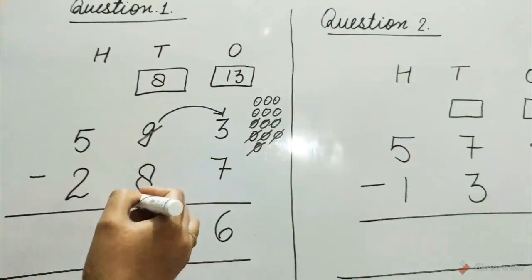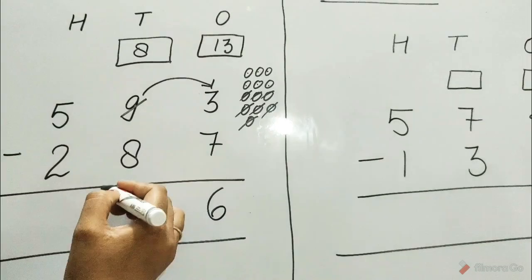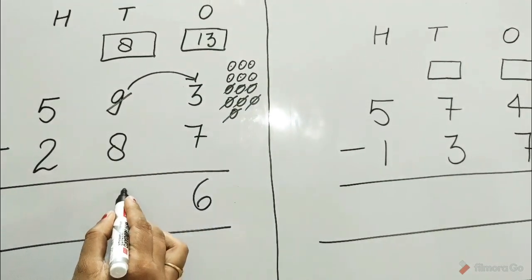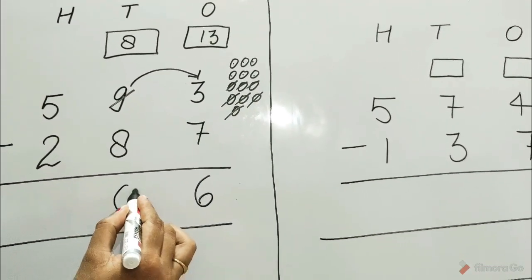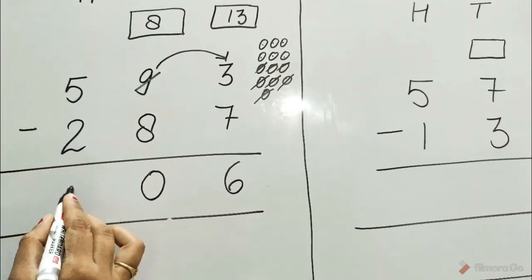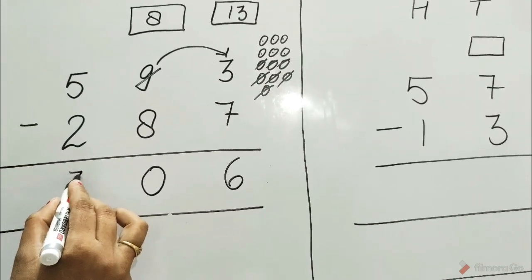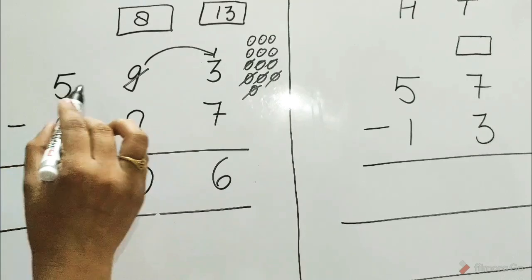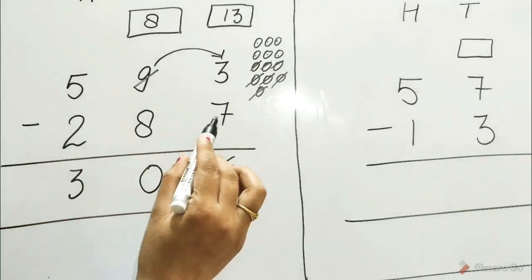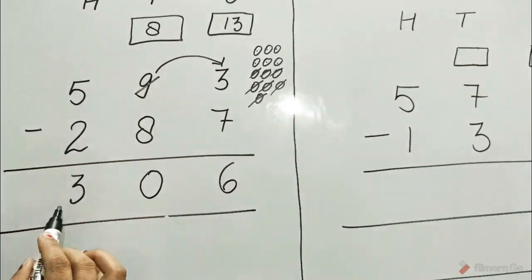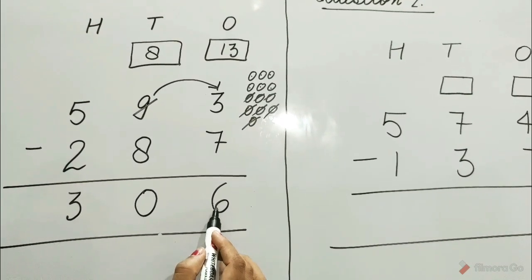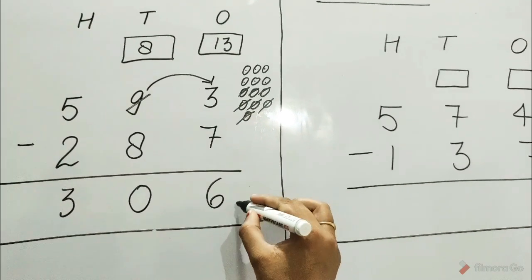Subtract the tens column. 8 minus 8 is 0. 5 minus 2 is 3. 593 minus 287 is equal to 306. Answer.